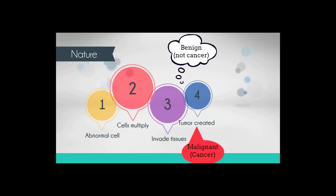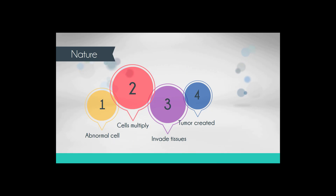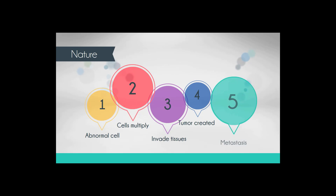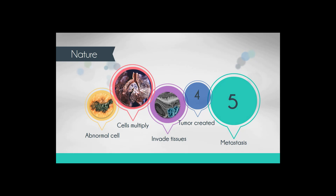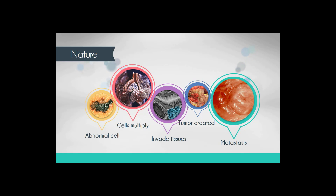Tumors can be both benign, which means non-cancerous, and malignant, which means cancerous. Malignant tumors contain cells that grow out of control and can invade surrounding tissues. Sometimes cancer moves away from the original or primary site to other sites and organs of the body — this is referred to as metastasis or secondary cancer. There are multiple cancers, most of which are named according to their location in the body: skin, lung, prostate, bowel, cervical cancer, etc. If the cancer moves to a secondary site, it maintains its original site name — e.g., skin cancer that has spread to the lymph glands is still called skin cancer.